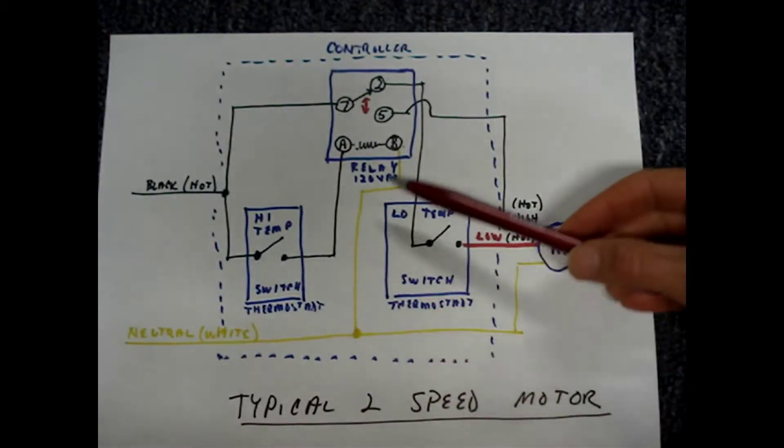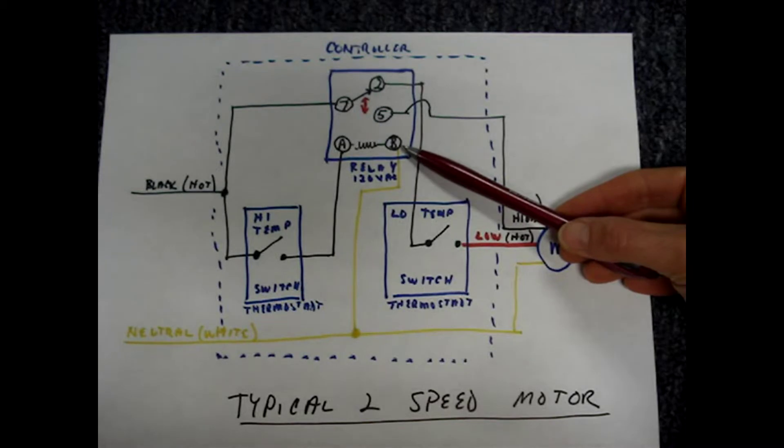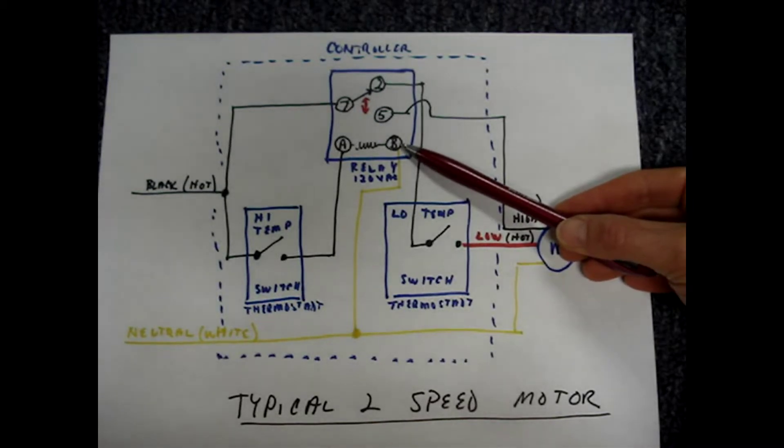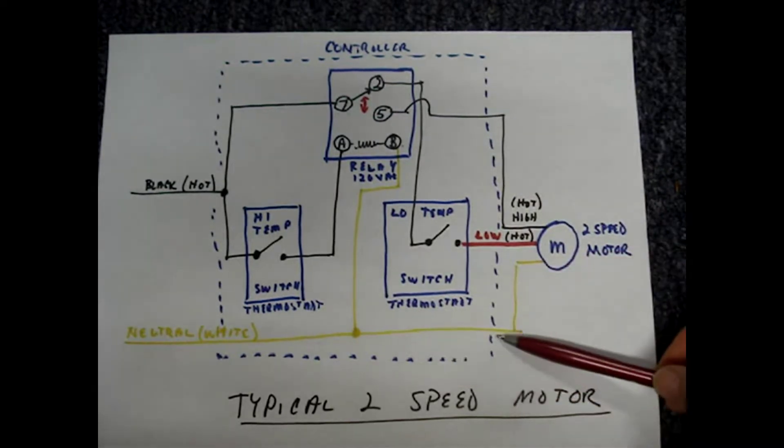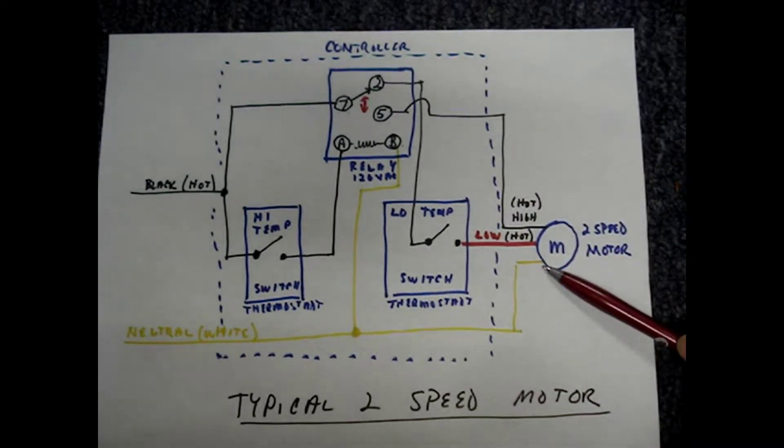The neutral wire goes to terminal B on the coil of the 120 volt relay. It also connects to one leg of the two-speed fan motor.